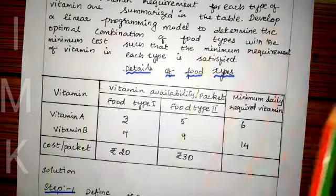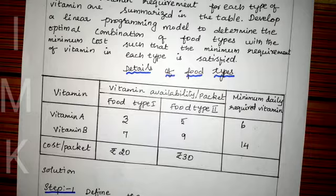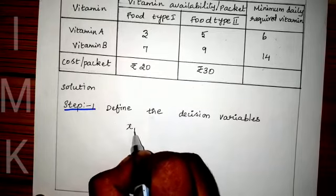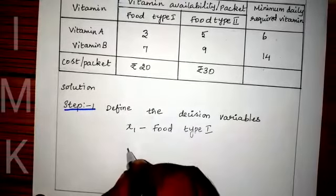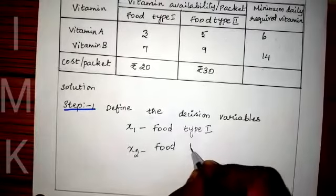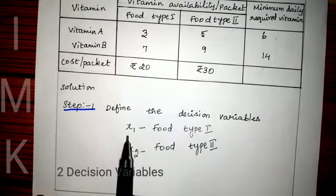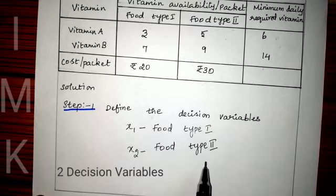In this problem, the main thing is the food item. For each food item, the vitamin requirement is given. There are two different food items, so we have to define two decision variables: x1 for food type 1 and x2 for food type 2. You can use the symbols x and y as well. There are two variables — one for food type 1 and another for food type 2.